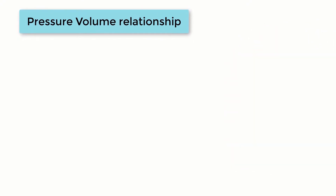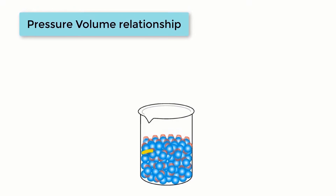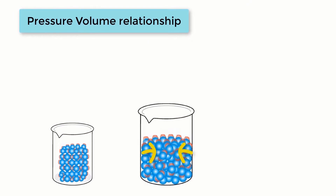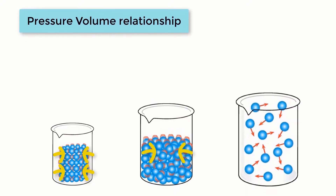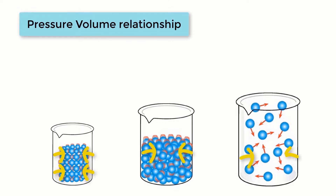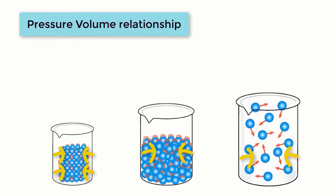If a certain number of gas molecules are held in a container, there is always a certain amount of pressure on the gas molecules from the container. If the volume of the chamber decreases, the same number of gas molecules will now be under greater pressure and be forced to move more closely to each other. However, if the volume of the container increases, the same number of molecules now have less pressure exerted on them by the container, as there is more room for the molecules to move around.